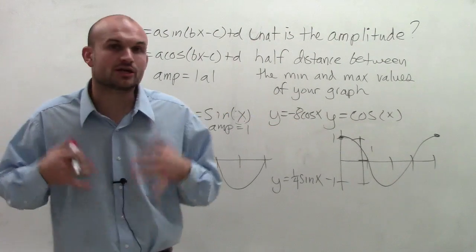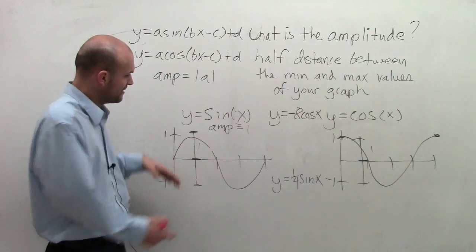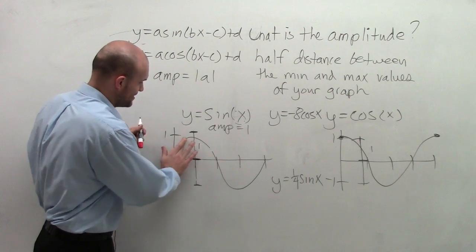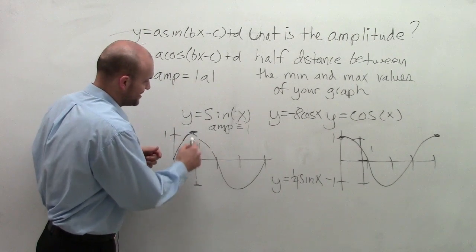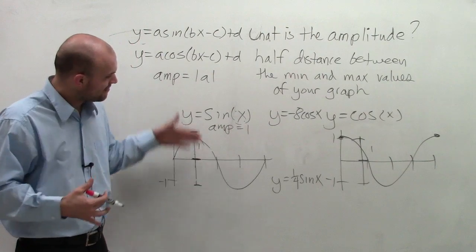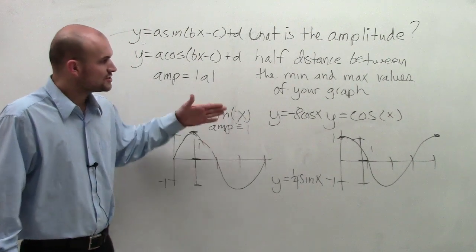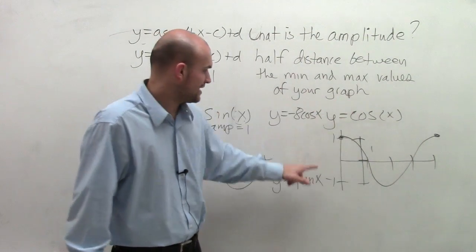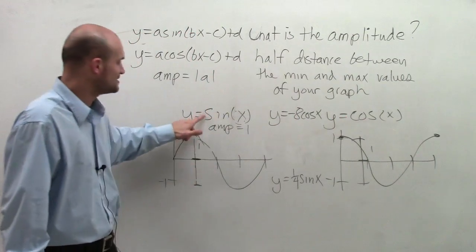So when looking at your sine and cosine graph, by looking at our parent function, remember it's the half distance from the maximum point to our minimum point. So for the parent graph, our amplitude is 1. As you can notice, the coefficient of both these functions is 1.